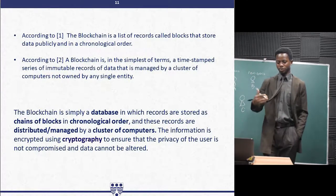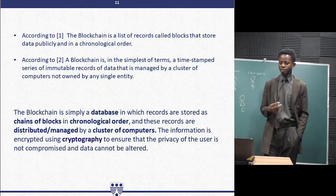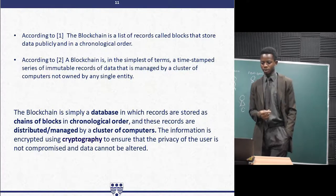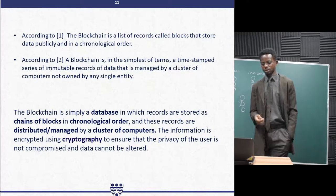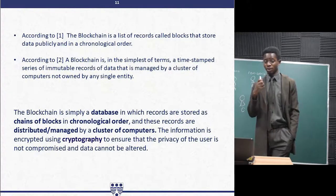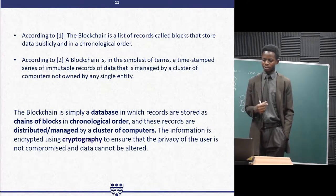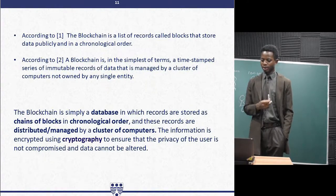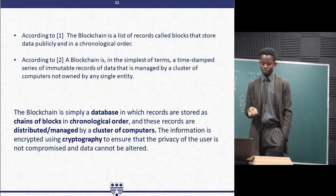According to the first reference, listed at the end of this slide, the blockchain is a list of records called blocks that store data publicly and in chronological order. The second definition says a blockchain is, in the simplest of terms, a timestamped series of immutable records of data that is managed by a cluster of computers not owned by a single entity.